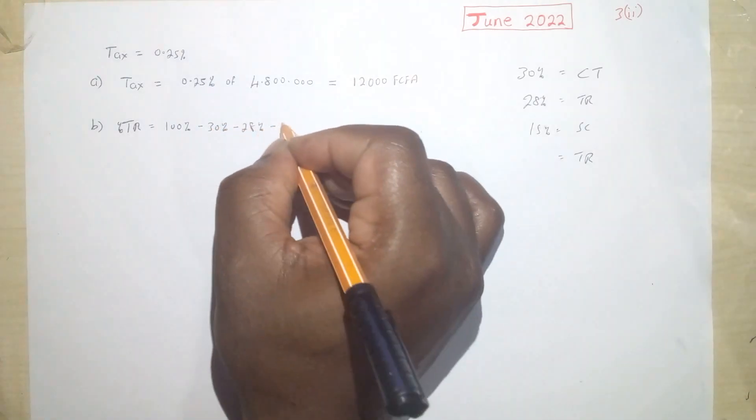We need to find how much was paid into the government treasury. First, we get the treasury percent. The treasury percent should be equal to 100% minus 30% minus 28% minus 15%. This is equal to 27%.